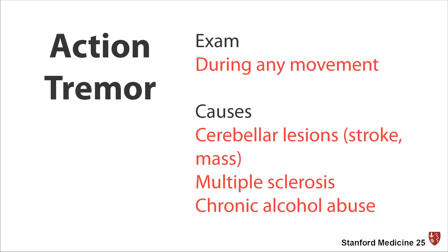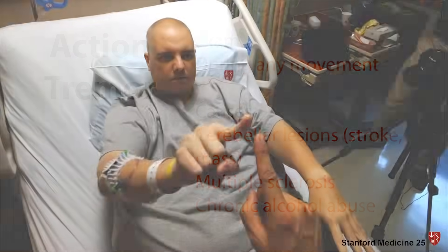The third and final category of tremor is the action tremor, sometimes referred to as the kinetic or, for our purposes, the intention tremor, which occurs in essentially any type of movement. Causes include cerebellar lesions like a stroke or a cerebellar mass, multiple sclerosis involving the cerebellum, or chronic alcohol abuse.